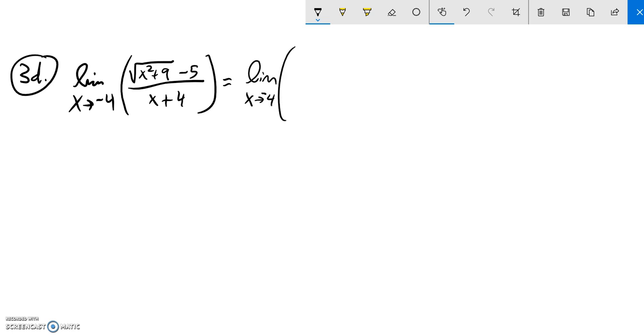So x approaches negative four, and this is the square root of x squared plus nine minus five over x plus four. And I'm going to multiply by the conjugate of this, which is just exactly what the first term says, x squared plus nine, then opposite operator, so plus five. And when I say I'm multiplying by the conjugate, I'm really multiplying by one just with the conjugate as that form.